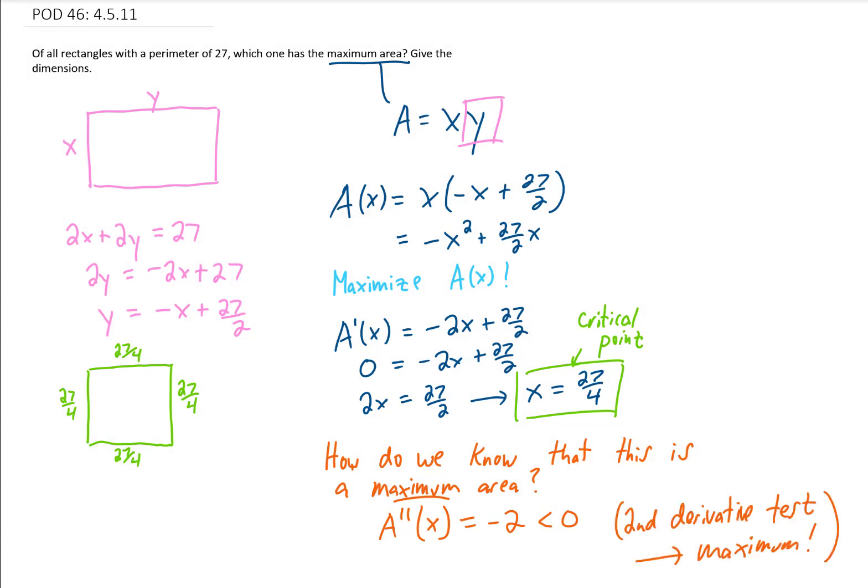So I think that answers the question. If we want to maximize a rectangle that has a perimeter of 27, we make it into a square. And each side is going to be 27 fourths units long. Alright, we're going to do another application problem in the next video, so I will see you there.